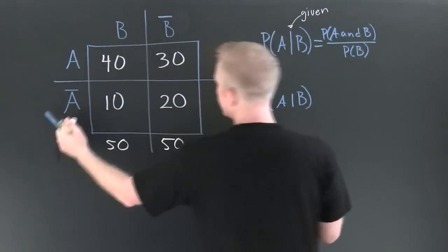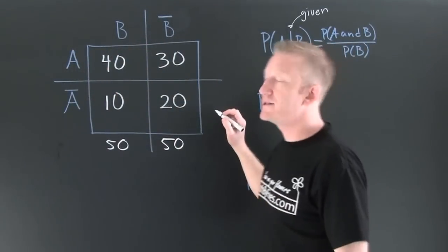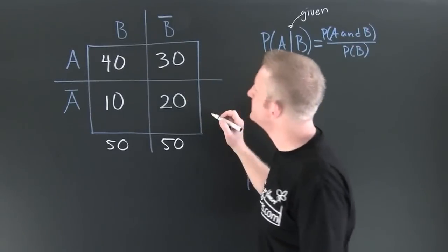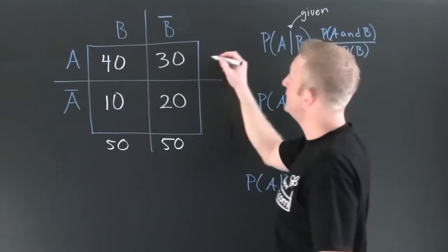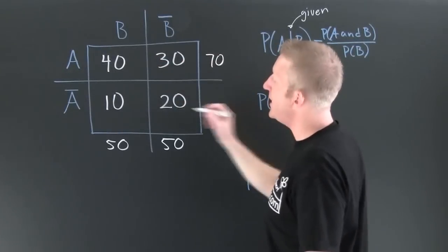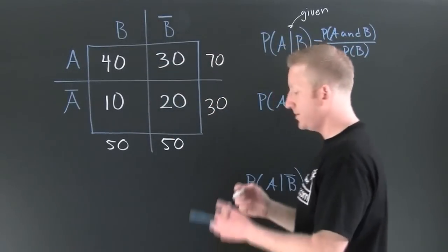50-50. Half in B, half not in B. Let's see what's up with A. So then here this is 70 things in A and 30 things that are not in A.